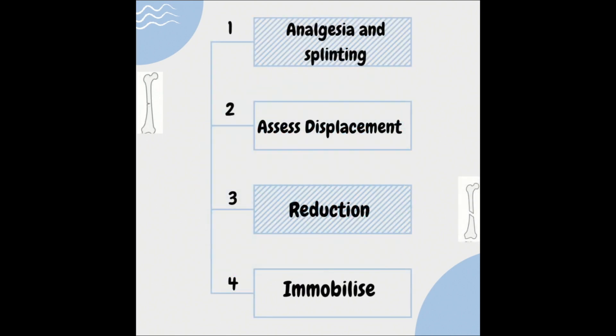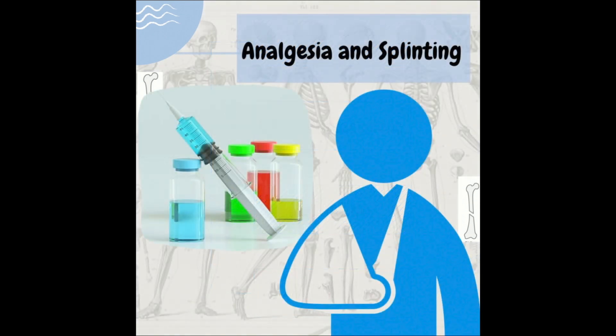Once we have saved the limb, we may now focus on the fracture. There are four basic steps that outline the philosophy of managing fractures. Step number one is analgesia and splinting. You must ensure that you give your patient appropriate analgesia, which can be done intravenously or orally depending on your patient's level of consciousness. Next, you must splint the fracture until a decision can be made on definitive management. This is done to minimize movement and prevent further injury.